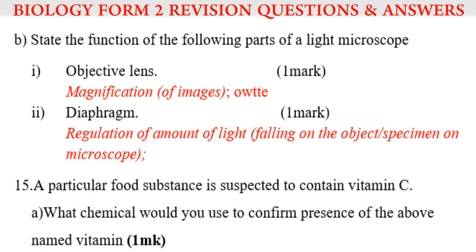Question number B: state the function of the following parts of a light microscope. Roman one — objective lens: objective lenses are used for magnification of images. Roman two — the function of the diaphragm: it is used for regulation of the amount of light falling on the object or specimen on the microscope.